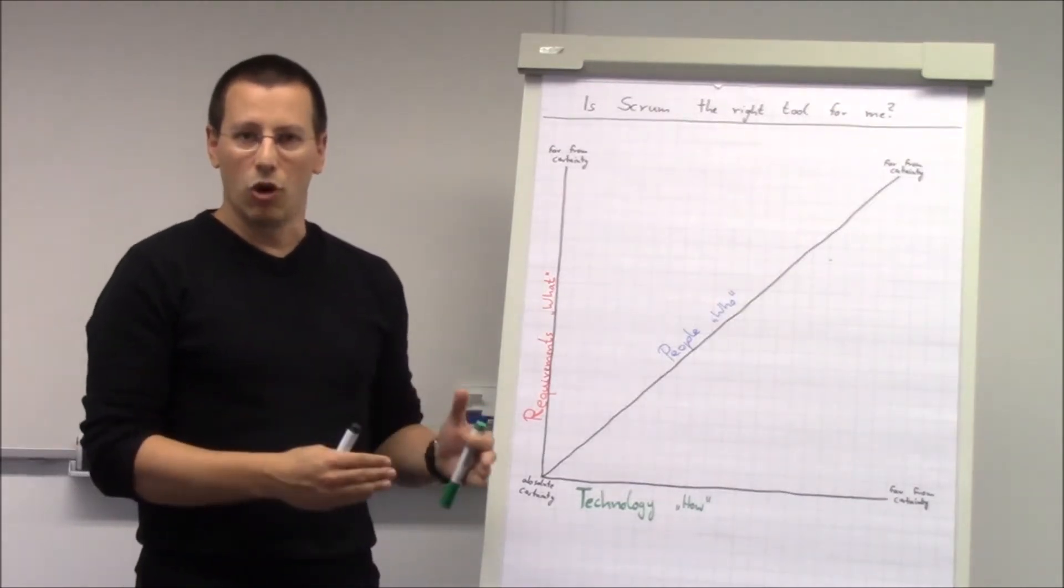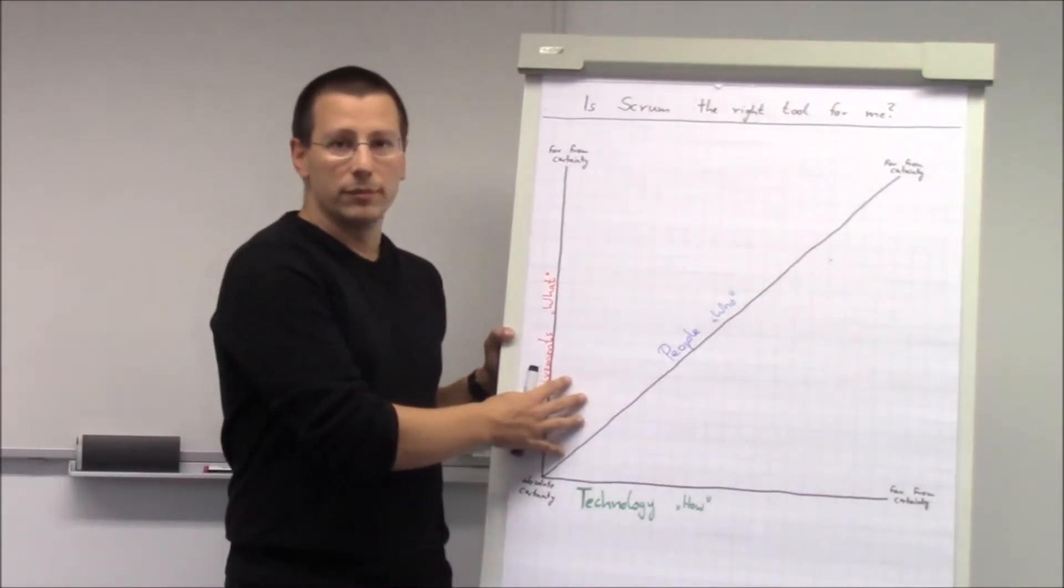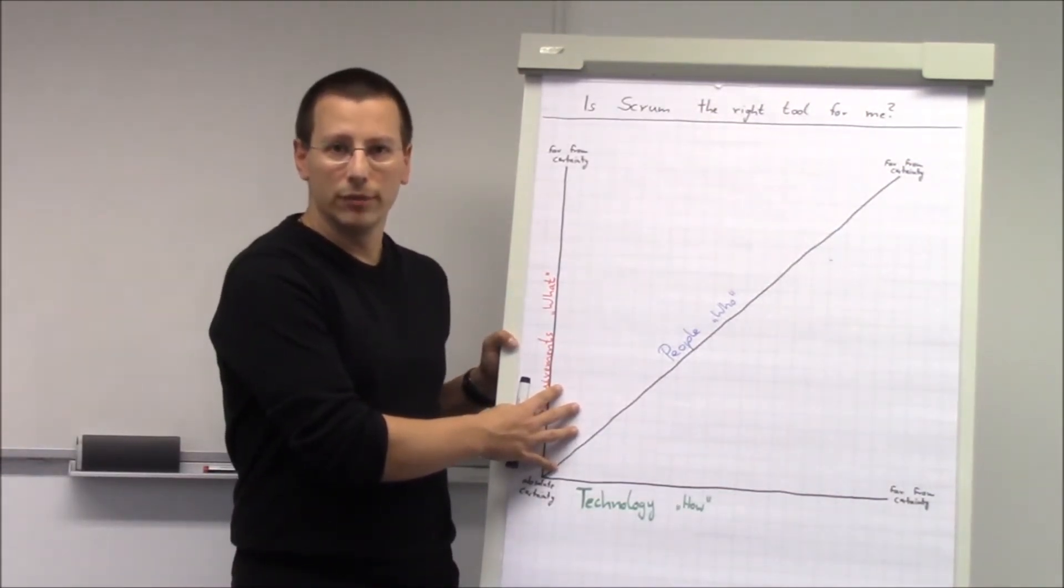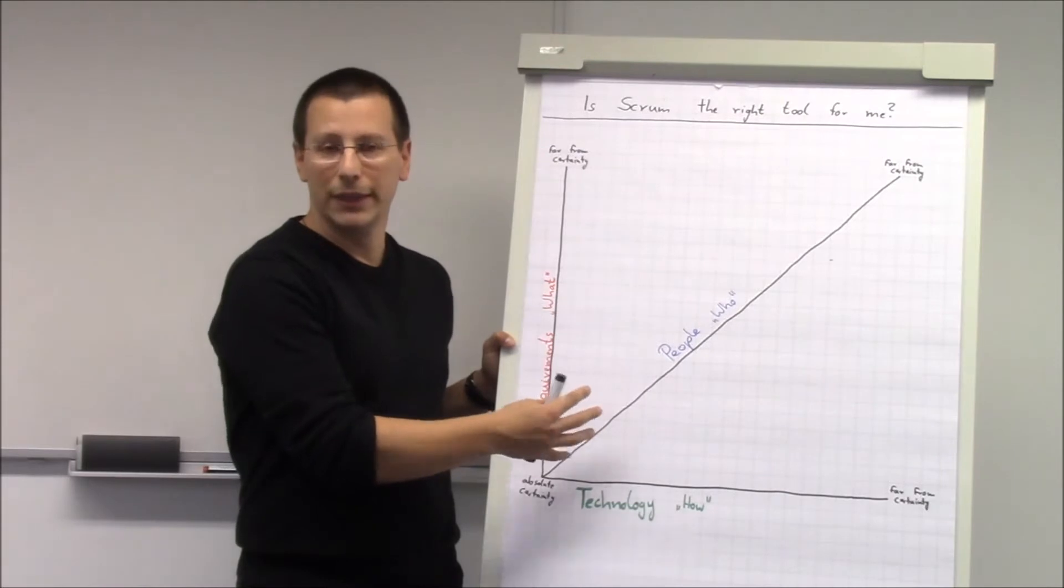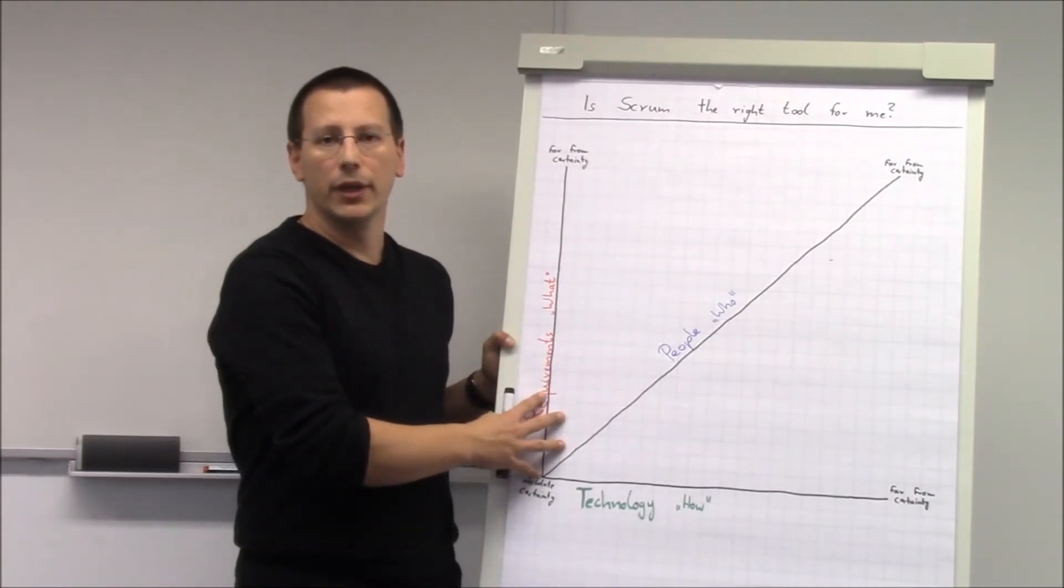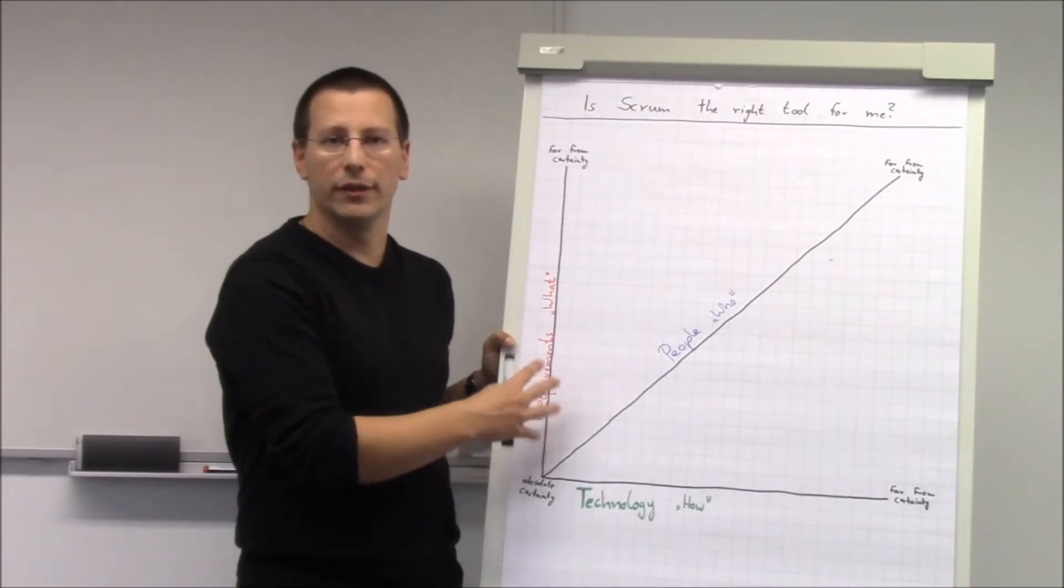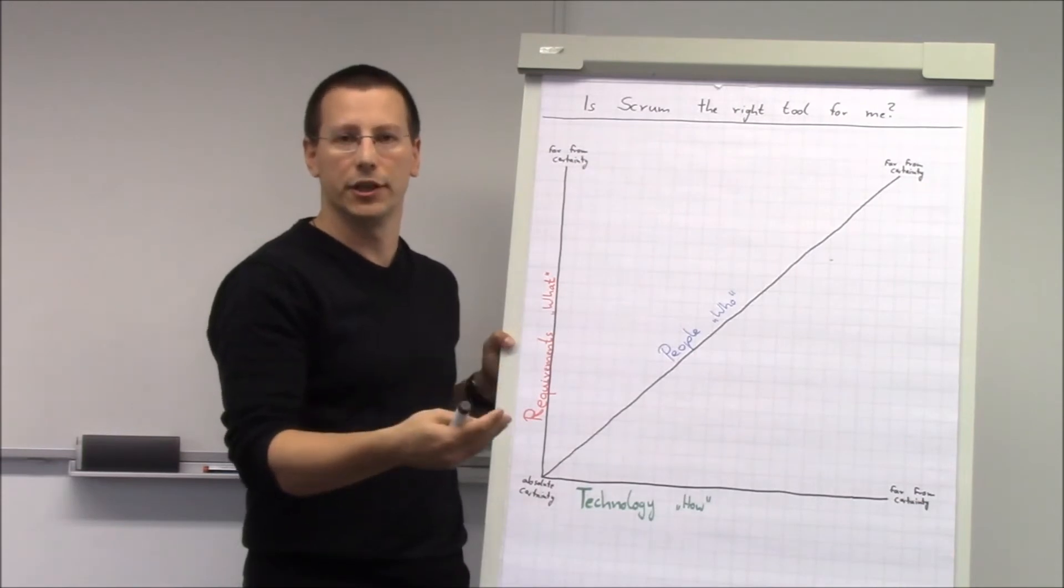All models are wrong, some are helpful. Now this model is usually referred to as the Stacey model, even though this is not entirely correct. Ralph Stacey created a very similar model, but he abandoned it a while ago, and Mike Beedle and Ken Schwaber in their first book built upon it. So that's why it's still called the Stacey chart.